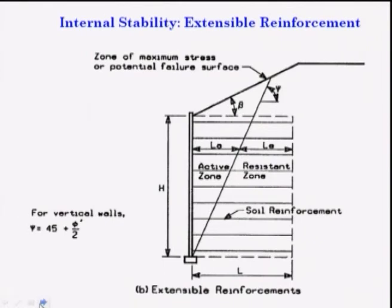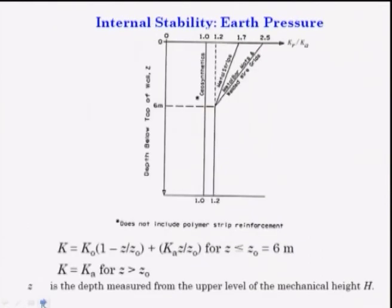The zone of maximum stress or potential failure surface is inclined at ψ = 45° + φ/2, defining the active zone and the resistant zone. Internal stability involving different earth pressures will be discussed in the next class.